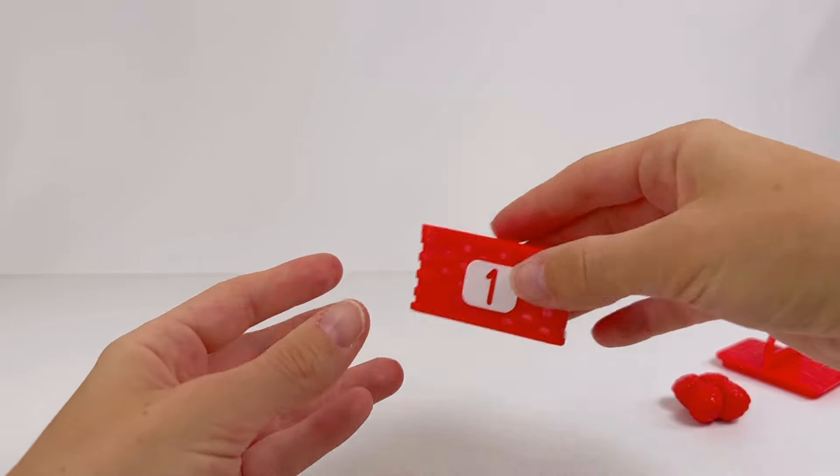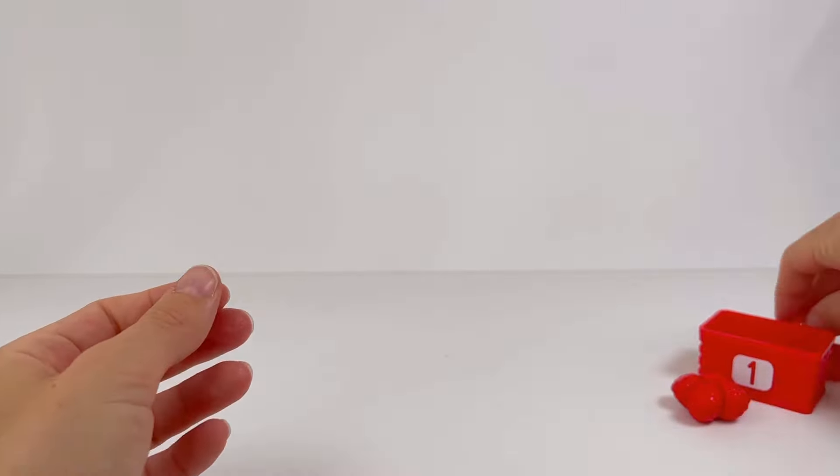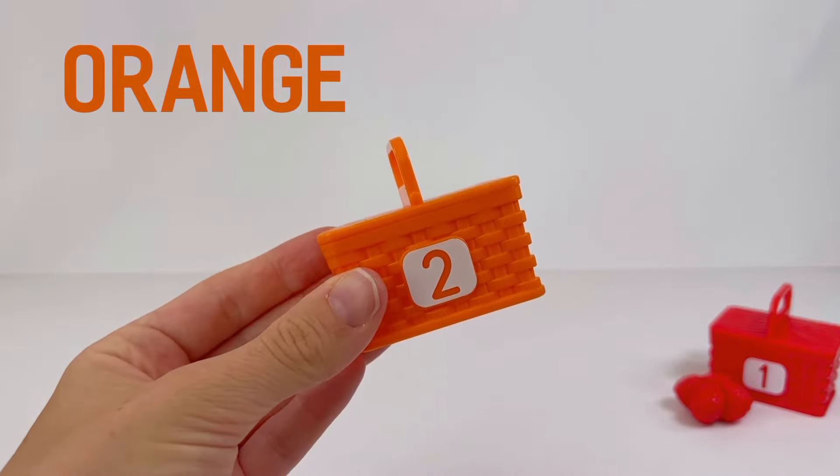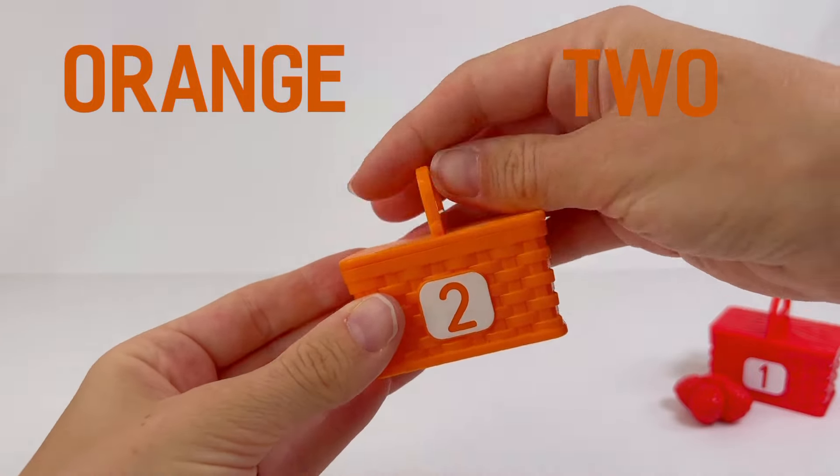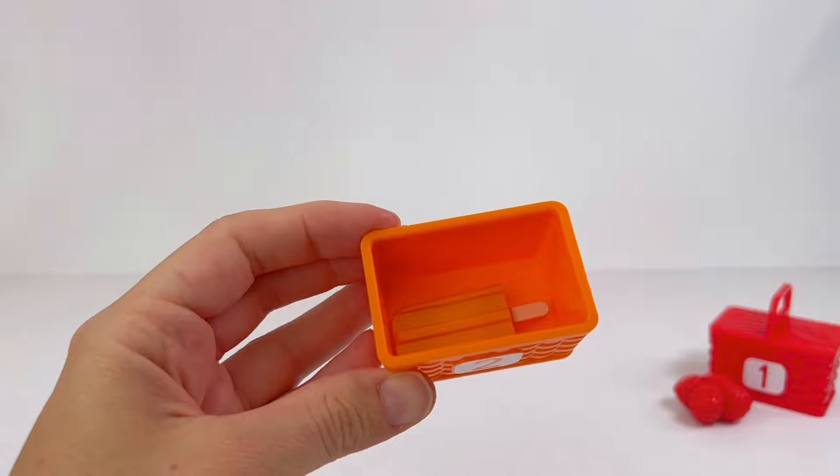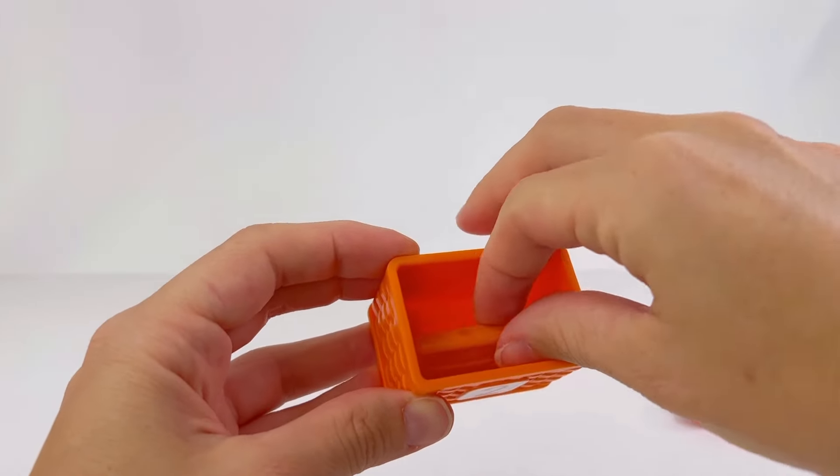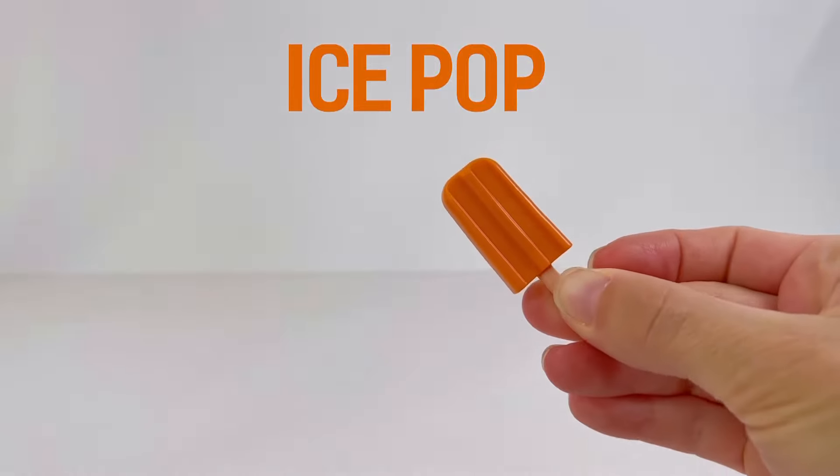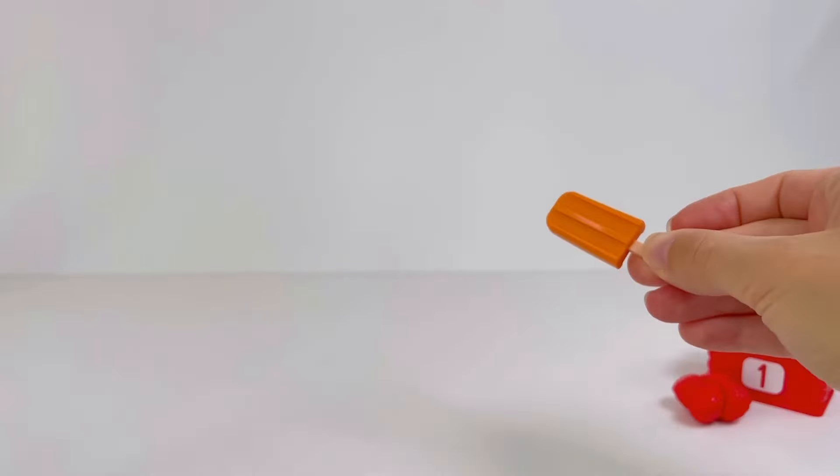This picnic basket is orange and has number two on it. Let's see inside. Wow, it's an orange ice pop. They're great on a hot summer's day.